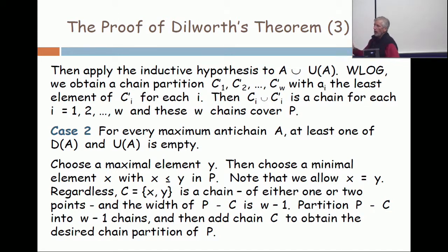So when you took away X and Y, the width has gone down. You partition what's left into W minus one chains and then put XY back on, whether it's a chain of size one or two, and you have everything. End of proof.